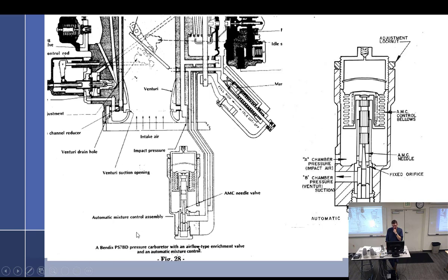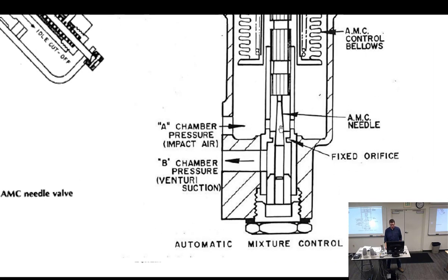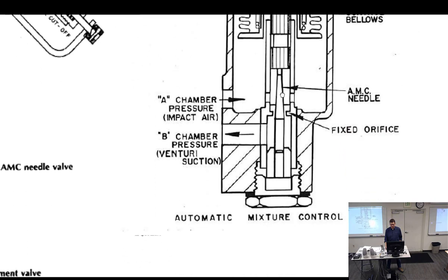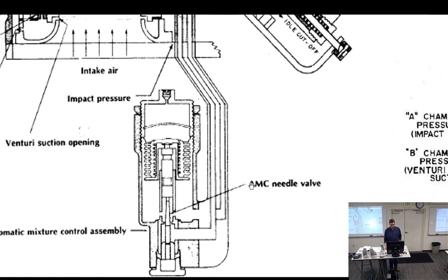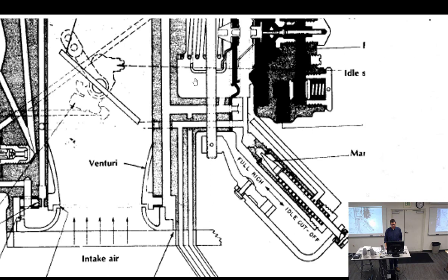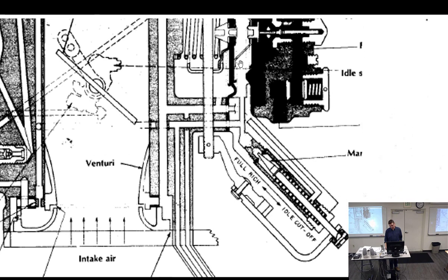This has an option for an automatic mixture control. All automatic mixture controls usually have some sort of bellows. When we go up in altitude, the bellows expands — it's filled with an inert gas and also responds to temperature. As it gets hotter or at higher altitude, it expands. When it expands, it drops a needle — it's an inverted needle, which means it's narrower in the expanded position.